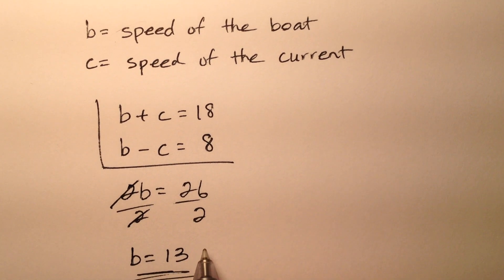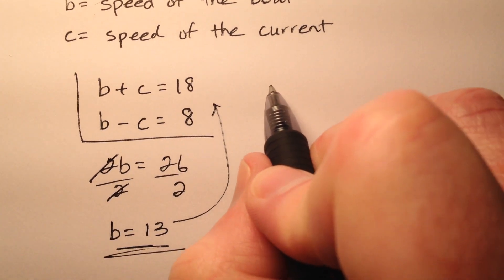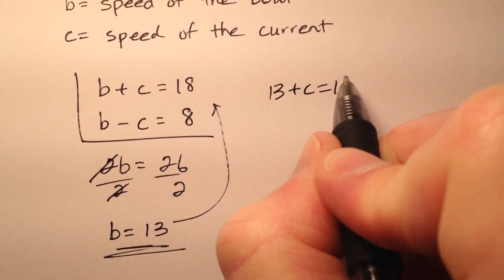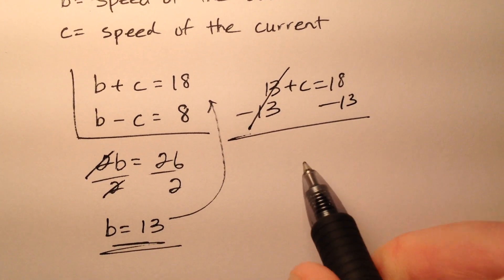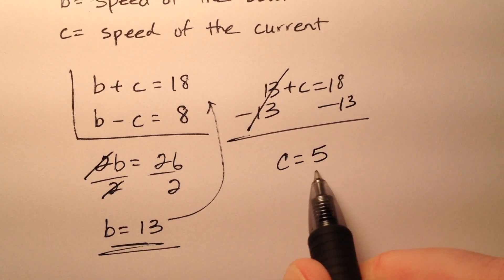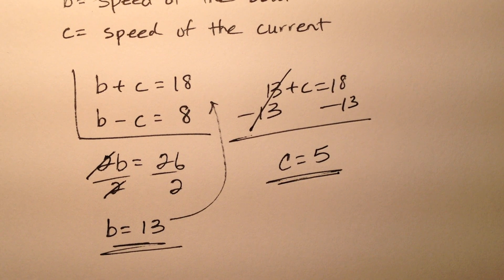Well, once we know what the speed of the boat is, we can plug it in. So 13 plus C equals 18. So subtracting 13 from both sides gives me 5 for the variable C, which was of course the speed of the current.